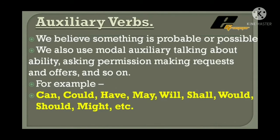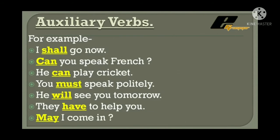Now, what are auxiliary verbs? We use them when we believe something is probable or possible. We also use modal auxiliaries when talking about ability, asking permission, making requests and offers, and so on. For example: can, could, have, may, will, shall, would, should, might, etc. Auxiliary verbs are of two types: helping verbs and modal auxiliaries. All the highlighted verbs shown are auxiliary verbs and they are all modal auxiliaries.